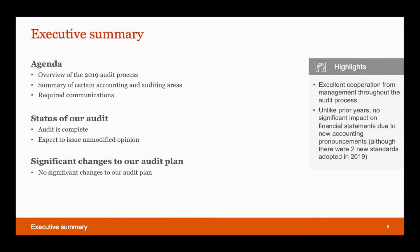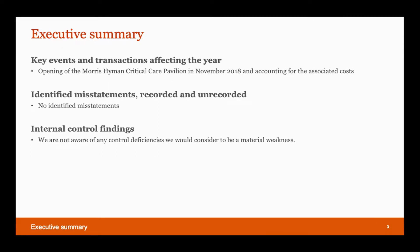In terms of changes to the audit plan, I'm pleased to report that as the audit progressed, there were no changes. The key event this year was bringing a new building online, which meant additional testing around capital spend and ensuring the building was properly placed in service and depreciated in accordance with accounting standards. We identified no misstatements — there were no adjustments that came out of our audit. There is nothing on our score sheet. From an internal control finding perspective, we are not aware of any material weaknesses in the control environment.